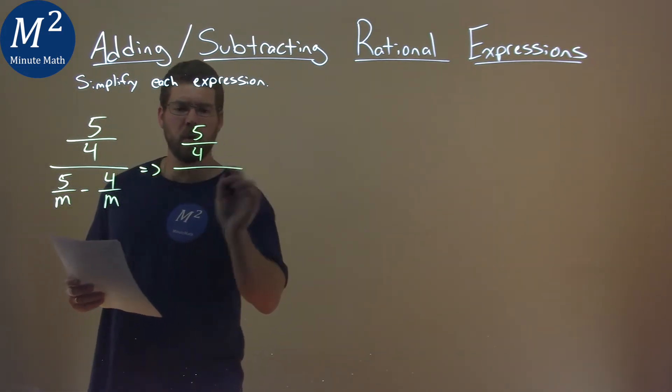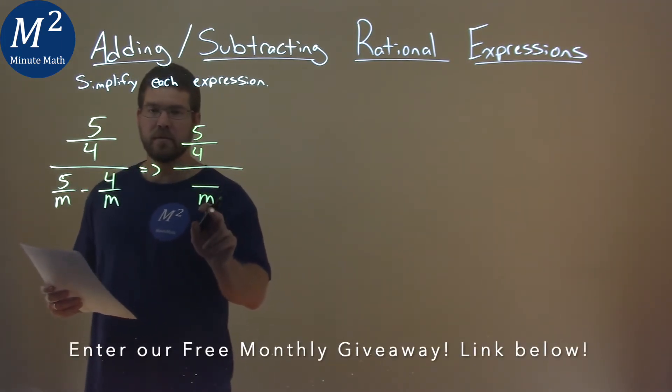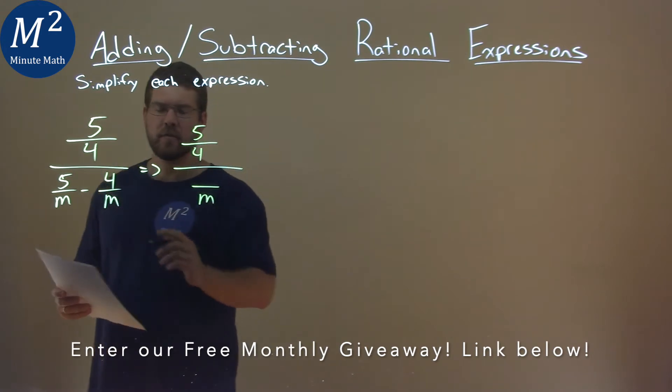So we have 5 fourths here over, well we can write this as one fraction with our one base denominator m, and 5 minus 4 is a 1.